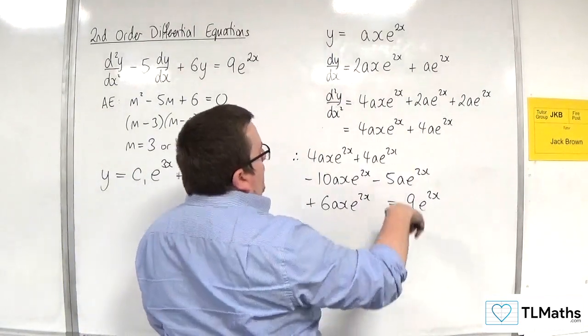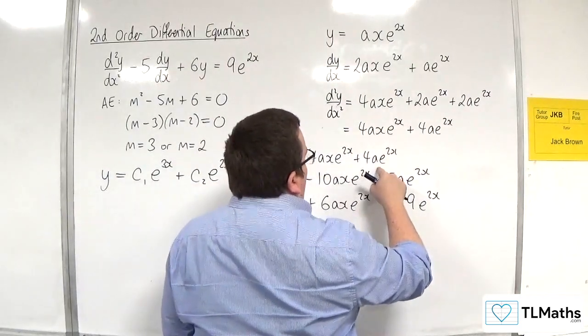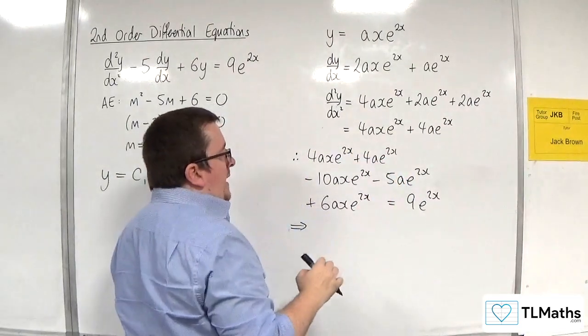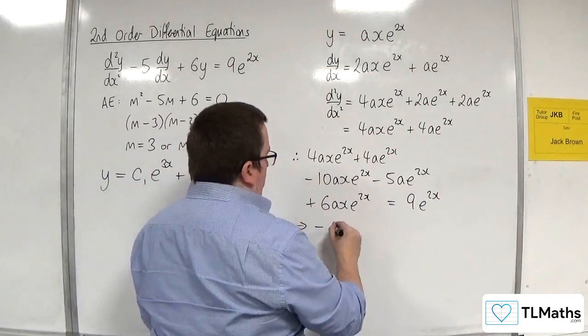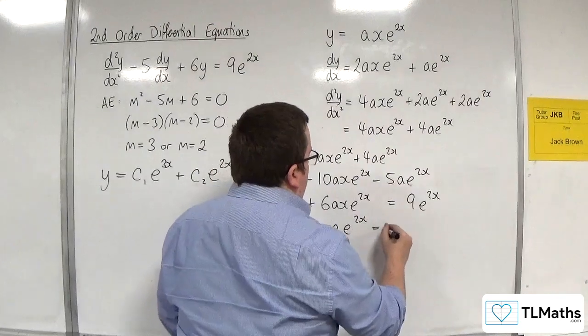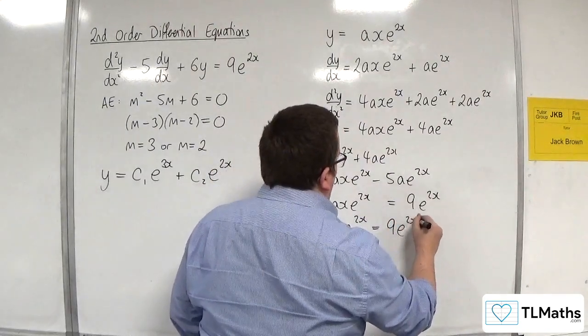Good, get rid of those terms. What I'm left with is 4ae to the 2x take away 5ae to the 2x, and so that would be minus ae to the 2x is equal to 9e to the 2x.